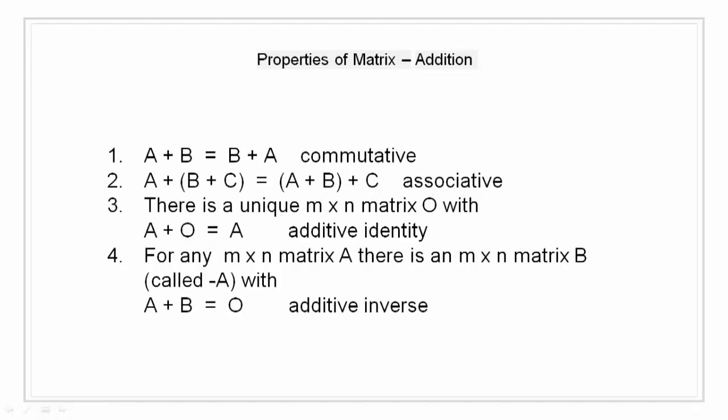Properties of matrix. Properties of addition. There are 4 properties of addition for our matrix. That is commutative, that is A plus B is equal to B plus A. Then second is associative, that is A plus B plus C is equal to A plus B plus C. Then there is additive identity, where there is a unique M cross N matrix O with A plus O equal to A. And additive inverse identity, that is A plus B is equal to O.